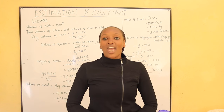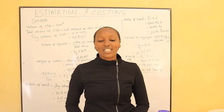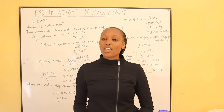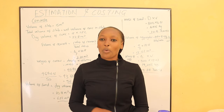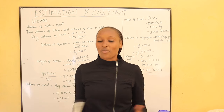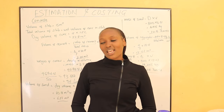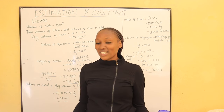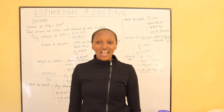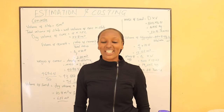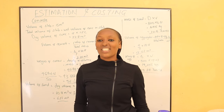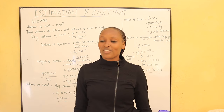It is a new series — for estimation of materials in a building project. We had already done our first video where we calculated the amount of cement and sand required for plastering. We estimated how many bags of cement and what quantity of sand, noting that cement is usually bought in 50 kg bags from the hardware.